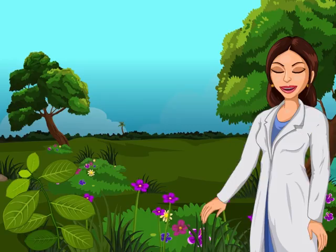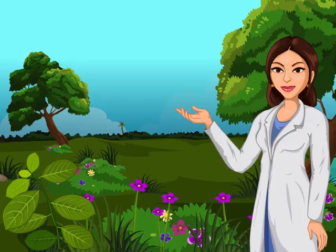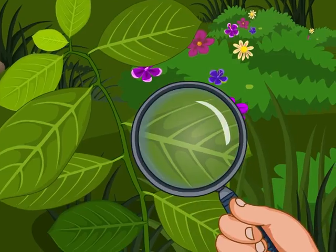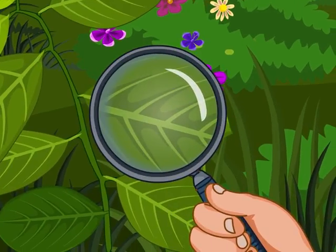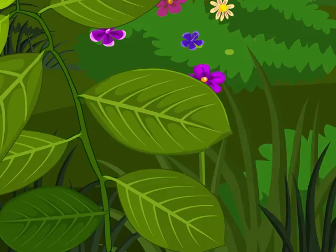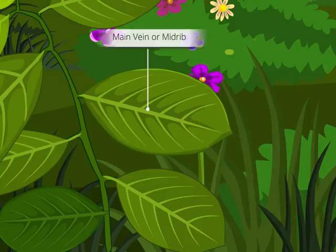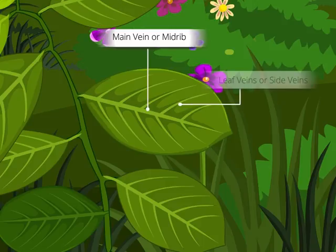Let us see a leaf through a magnifying glass. You can see a line running through the center of the leaf. This is called the main vein or midrib. Leaves also have some fine lines on both sides of the main vein. These are called leaf veins or side veins.